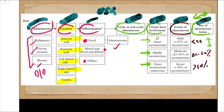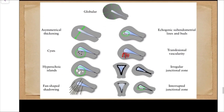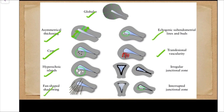Once the diagnosis of adenomyosis is made, there are eight to nine findings that are diagnostic. First, due to muscular hypertrophy or hyperplasia, the uterus would be enlarged and globular in shape. There would be asymmetrical thickening of the myometrium — the posterior myometrium is more thickened than the anterior. Then there are myometrial cysts, hyperechoic islands (which are ectopic endometrial glands), venetian blind shadowing, echogenic subendometrial lines and buds, and trans-lesion vascularity with tortuous penetrating vessels. There would also be irregularity and interruption of the junctional zone.